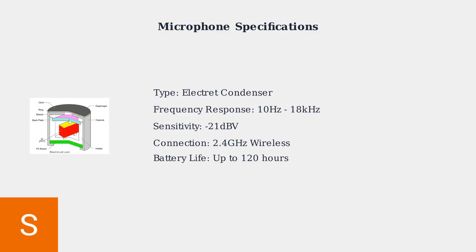Next, we configure audio filters to clean up your signal. High-pass and low-pass filters remove unwanted frequencies from your audio. A high-pass filter removes low-frequency rumble and unwanted bass sounds — set the cutoff frequency between 80 and 100Hz to eliminate room noise and handling sounds. A low-pass filter eliminates high-frequency hiss and noise — set the cutoff at 15kHz to remove unwanted high-frequency artifacts while preserving vocal clarity.